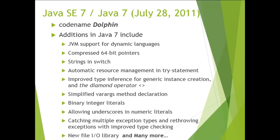The next version is Java SE 7, released on 28th July 2011, with the code name 'Dolphin'. Major additions include: JVM support for dynamic languages, compressed 64-bit pointers, strings in switch statements, automatic resource management in try statements, improved type inference for generic instance creation using the diamond operator, simplified variable arguments method declaration, and binary integer literals with underscore support.